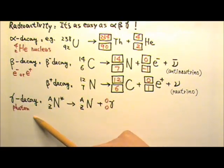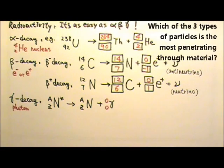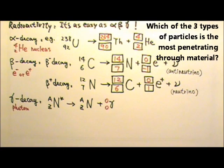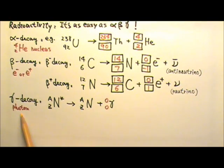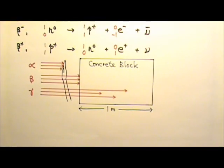Which of those do you think is the most penetrating through material? The gamma ray of course. It turns out that a hand can block alpha particles, but not the beta. And a concrete block can block beta, but a gamma ray can penetrate the concrete to some depth before being absorbed.